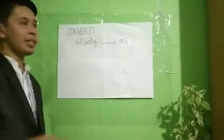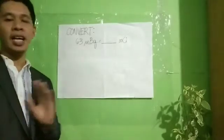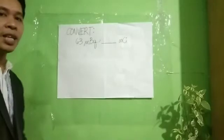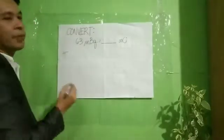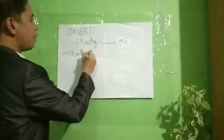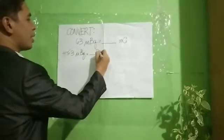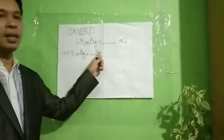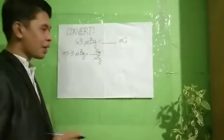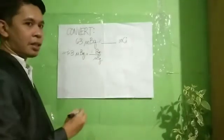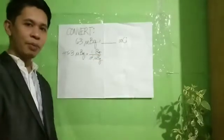In this problem, we are to convert 63 microbecquerel into millicurie. From the SI going now to traditional unit. 63 microbecquerel, copy as denominator. Convert to becquerel. Becquerel is larger, so for every 1 becquerel, there are 10 raised to 6 microbecquerel.